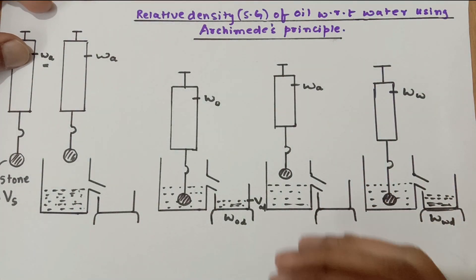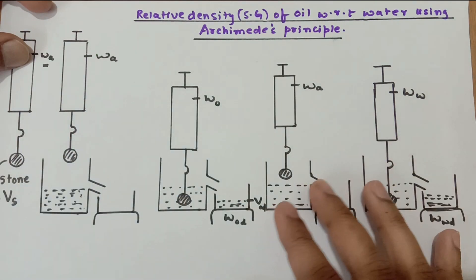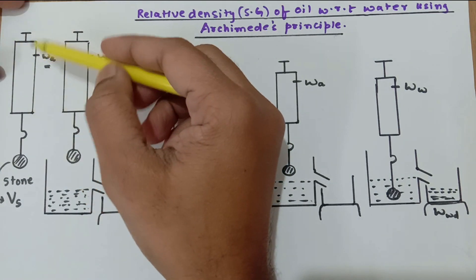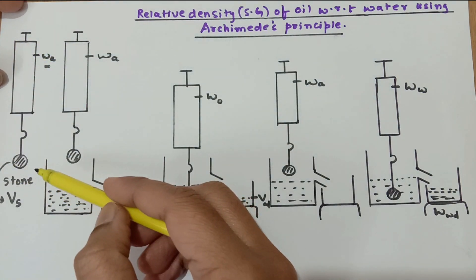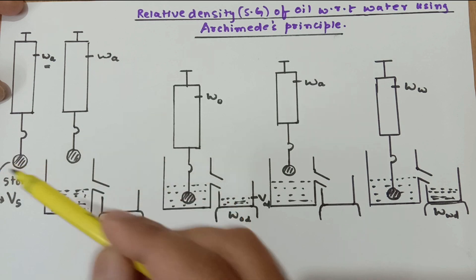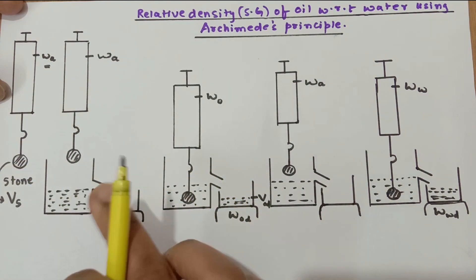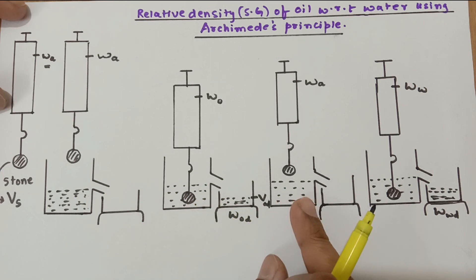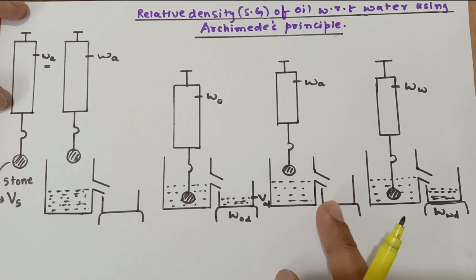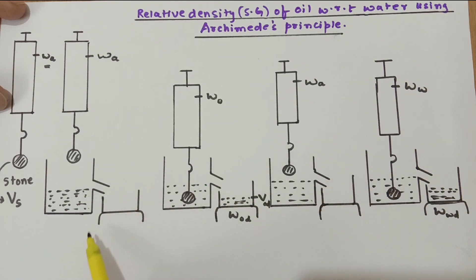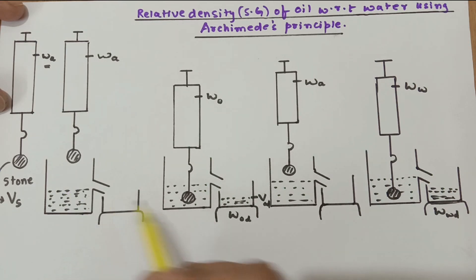You can watch the video from the link below to understand the entire experiment. For this experiment we require a spring balance, a stone — which is of course heavier than the oil and water we are going to use. We would require two Eureka cans, one filled with oil and another completely filled with water, both filled to the mark. We would also require two weighing balances and two beakers.